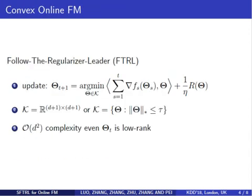Here, we consider a convex online learning algorithm, especially for the Follow-The-Regularized-Leader (FTRL) framework. A natural way is to use nuclear norm constraint to impose low rank on theta. However, the optimization on nuclear norm is expensive, with complexity that is quadratic in the number of dimensions.